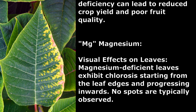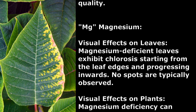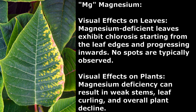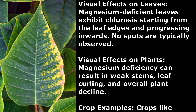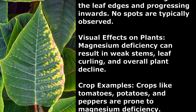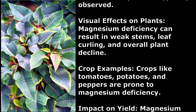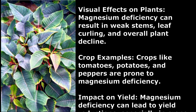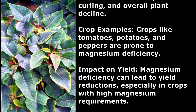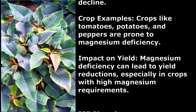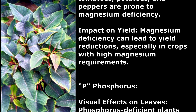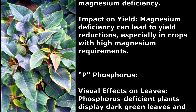Magnesium. Visual Effects on Leaves: Magnesium-deficient leaves exhibit chlorosis starting from the leaf edges and progressing inwards. No spots are typically observed. Visual Effects on Plants: Magnesium deficiency can result in weak stems, leaf curling, and overall plant decline. Crop Examples: Crops like tomatoes, potatoes, and peppers are prone to magnesium deficiency. Impact on Yield: Magnesium deficiency can lead to yield reductions, especially in crops with high magnesium requirements.